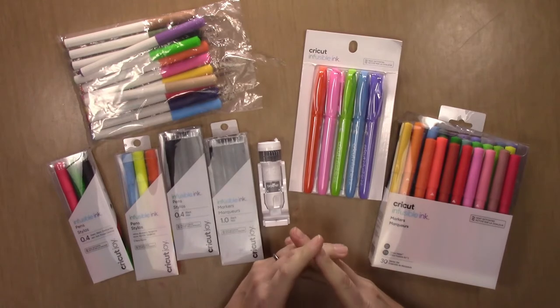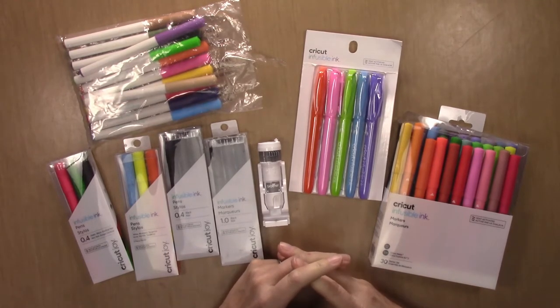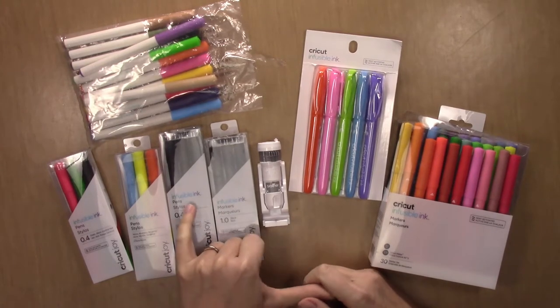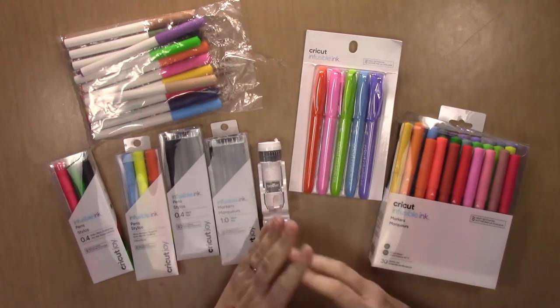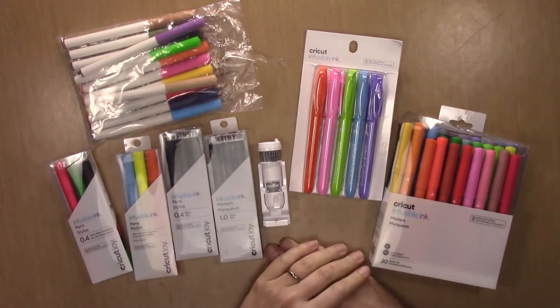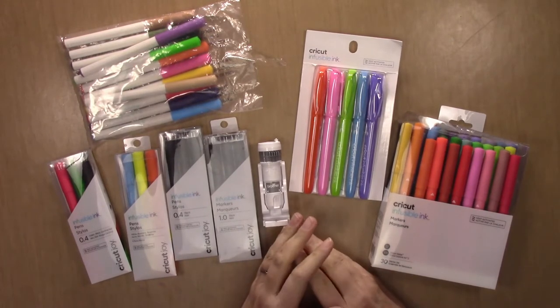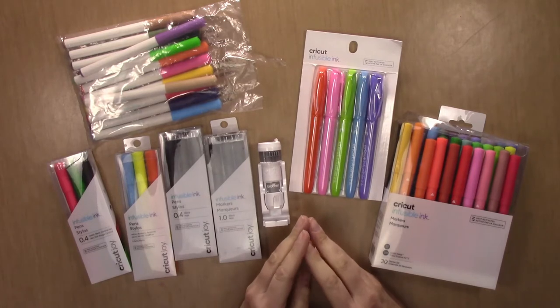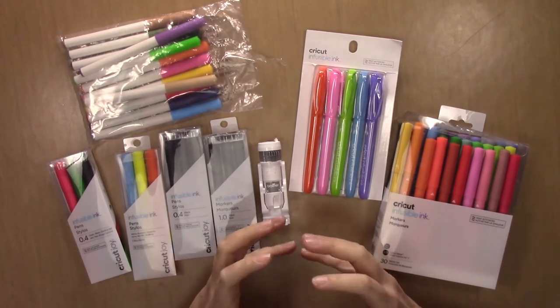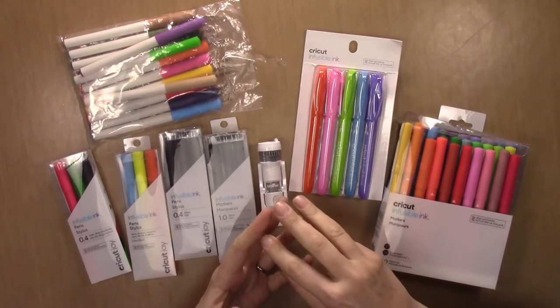Hey guys, if you're not familiar with infusible ink, it's the Cricut name for sublimation ink. Sublimation ink is ink that you can use with a heat press, and it's basically ink that turns into a gas under heat and gets infused into the fibers of the material that you're pressing it onto.